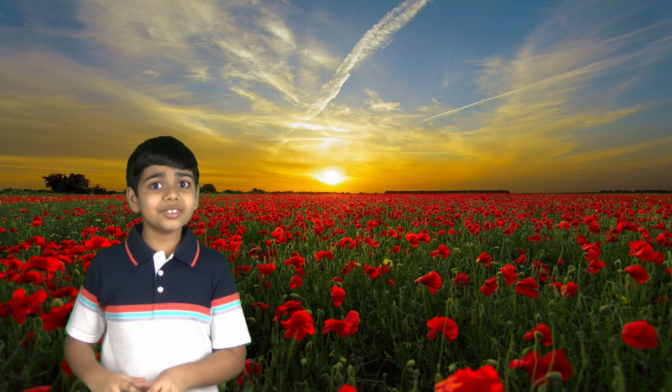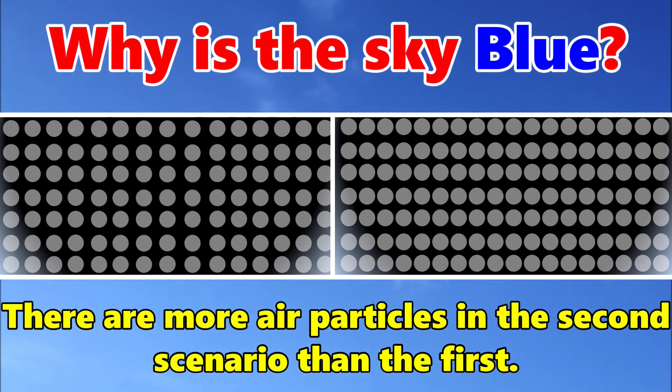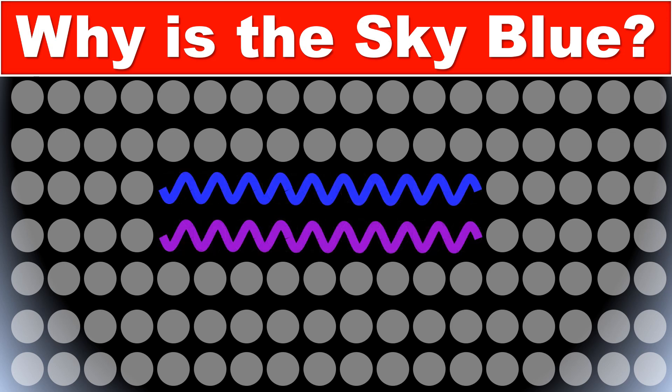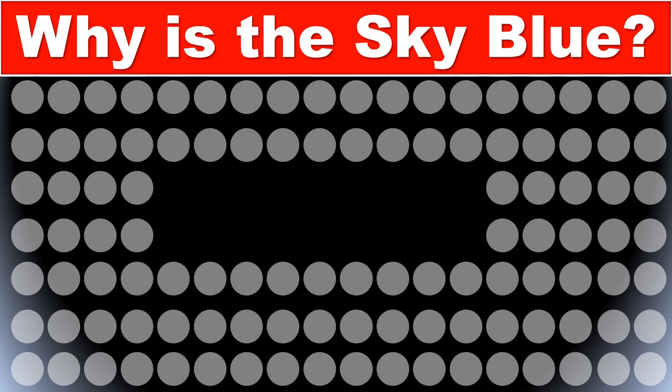Well, there's actually another explanation for that. When the sun is near the horizon, there are even more air particles in the atmosphere for those wavelengths to go through before reaching your eyes. So now, the blue and violet light is scattered even more.